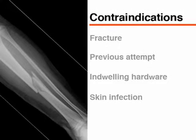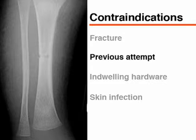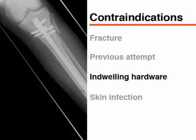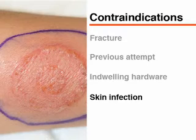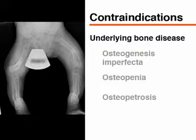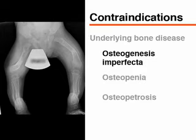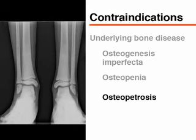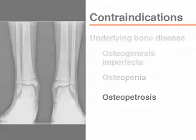Intraosseous access should not be attempted in any bone with a suspected or known fracture, proximal to a site, or in a bone in which a previous attempt was unsuccessful. Indwelling hardware from a previous orthopedic procedure may prevent successful cannulation. The presence of skin or soft tissue infection is a relative contraindication. Avoid intraosseous cannulation in patients with underlying bone diseases such as osteogenesis imperfecta or osteopenia, and in patients with osteopetrosis, a condition with very dense bone in which cortical penetration may not be possible.